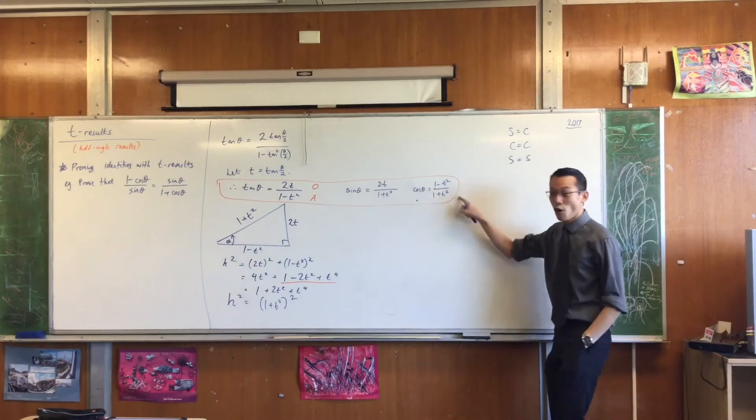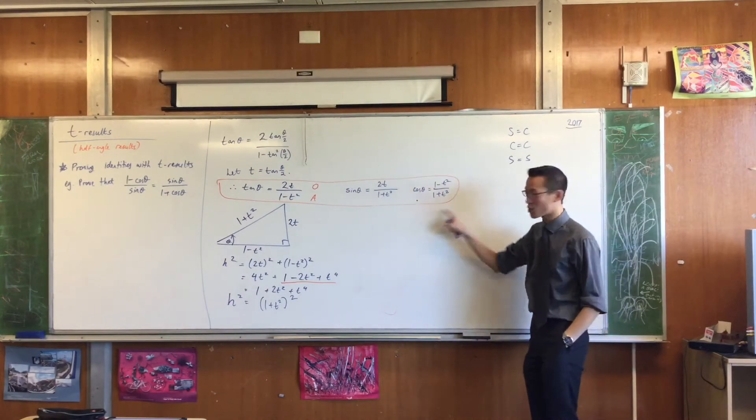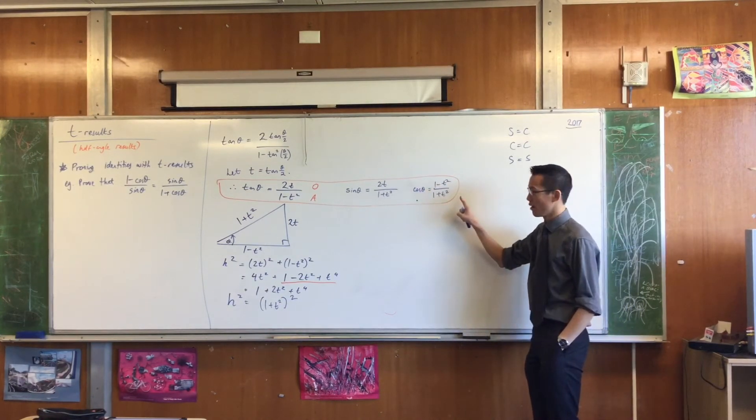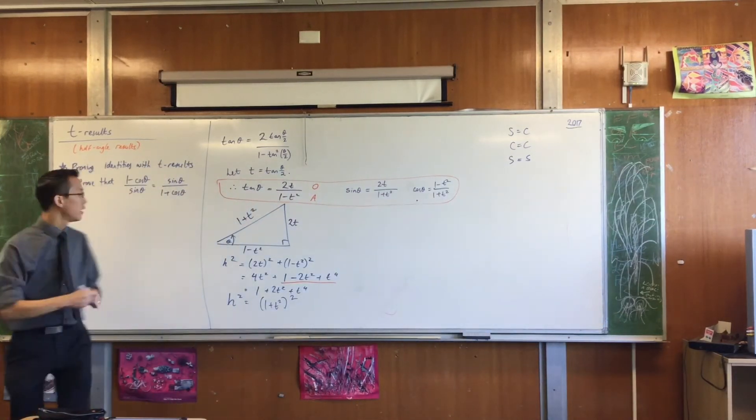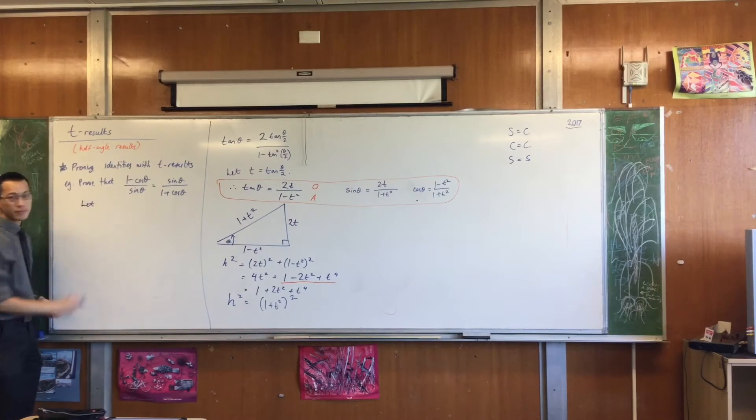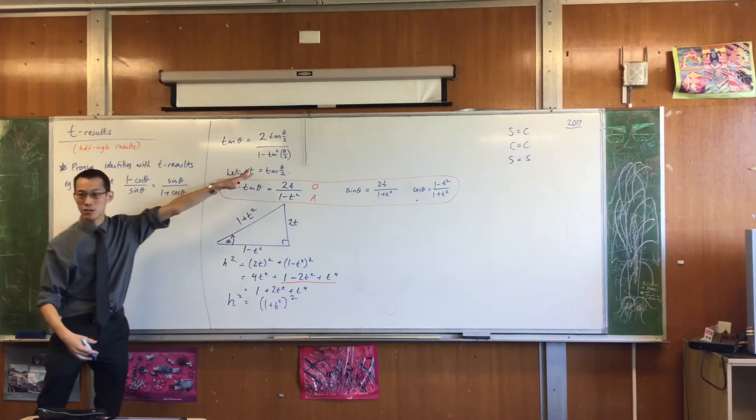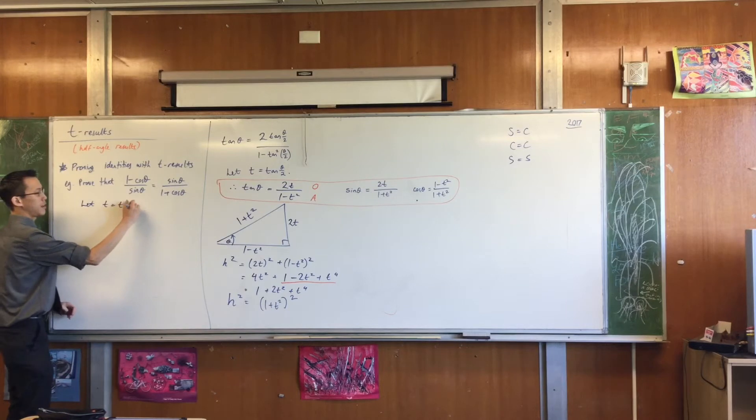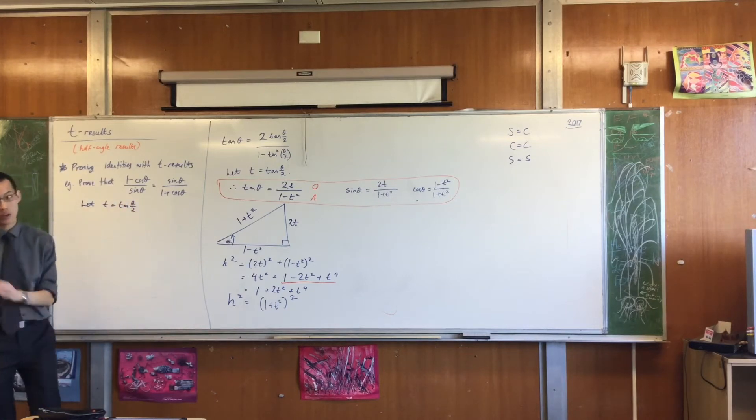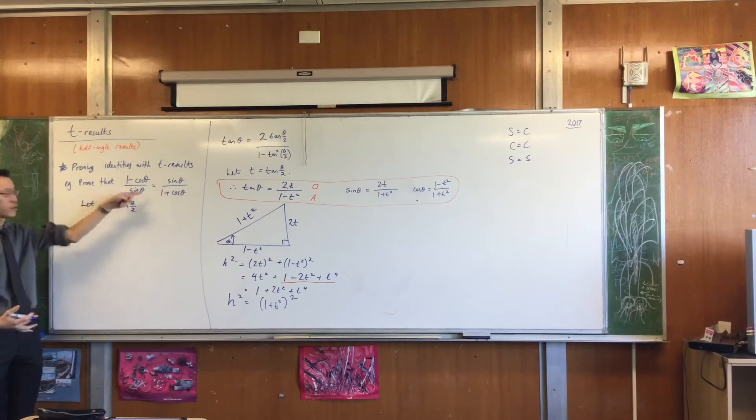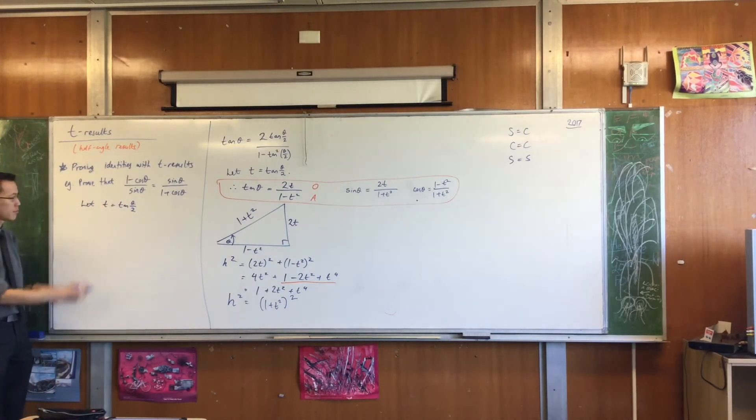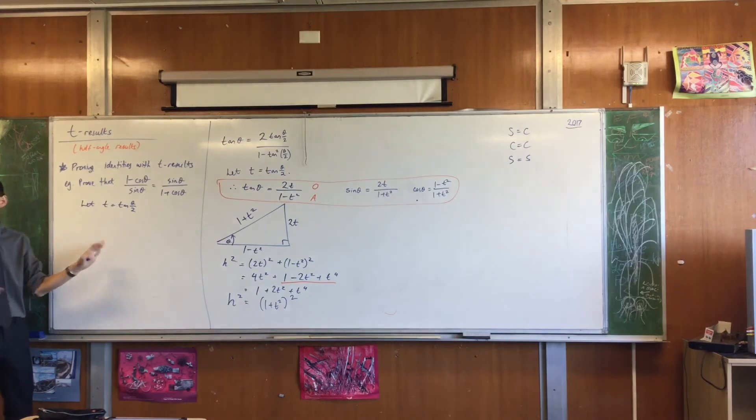But remember I said to you, the whole point is to hijack your skill with algebra to try and help us with trigonometry. So have a look at this. What I'm going to do is introduce this substitution. Let T equal tan theta upon 2. You've got to do it every time you use T results because you're about to talk about T's in the original question. Once you've done that, you can translate the question completely into algebra and leave the trig identities behind.